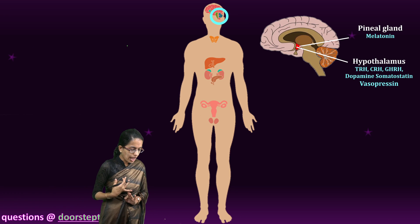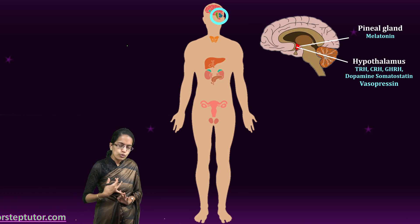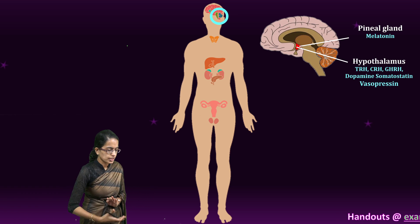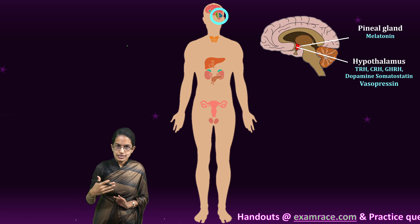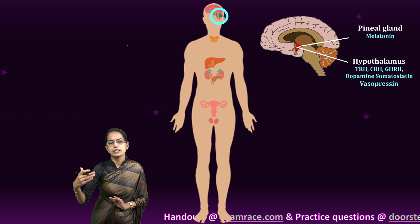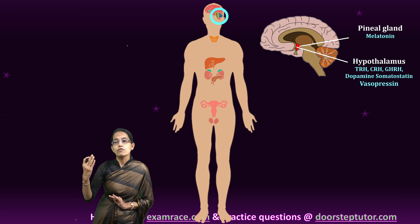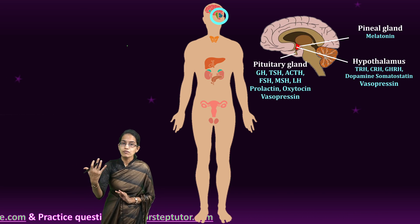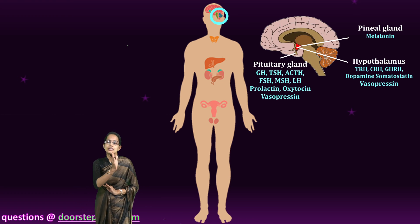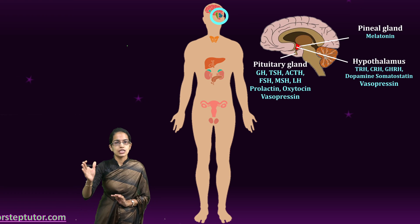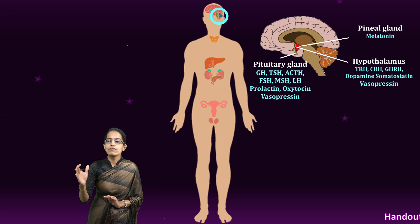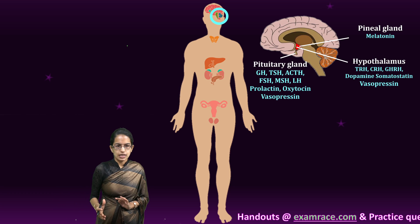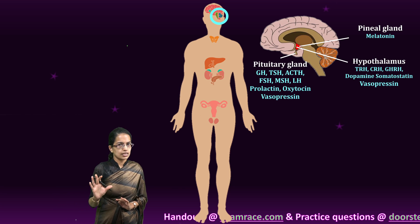The next are the hypothalamus and pituitary, both located at the base of the brain in the diencephalon region, as you can see in the picture. The hypothalamus is responsible for vasopressin, dopamine, and somatostatin as some of its major secretions. The pituitary is divided into anterior, posterior, and intermediate lobes, and various growth hormones are secreted by the pituitary gland.